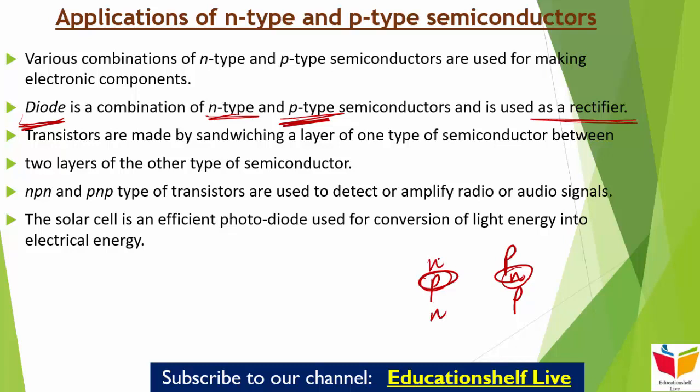The solar cell is an efficient photo diode used for conversion of light energy into electrical energy। जो solar cell है वो एक बहुत अच्छी photo diode है जिससे light energy को electrical energy में convert कर सकते हैं। Germanium और silicon group 14 के elements हैं, इसलिए इनका characteristic valence 4 है और वो 4 bonds बनाते हैं जैसे diamond में होते हैं। बहुत सारे solid state materials को हमने group 13 और 15 को मिलाकर या group 12 और 16 को मिलाकर बनाया है, जिससे average valence 4 की आ जाए।